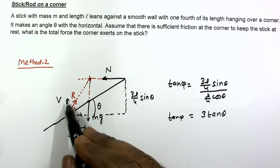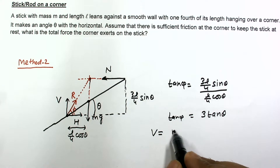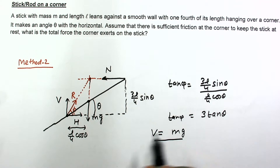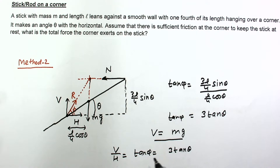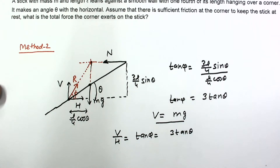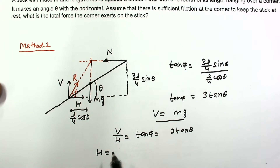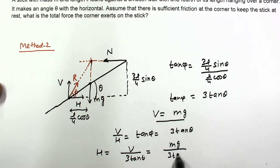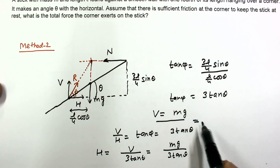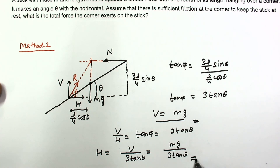For V, we can see very easily that V = Mg. For H, we write V divided by H equals tan phi, which equals 3 tan theta. So from here we can write H, the horizontal component of the force exerted by the corner, as H = V divided by (3 tan theta), and since V = Mg, H = Mg divided by (3 tan theta). This is the vertical component and this is the answer for the horizontal component.